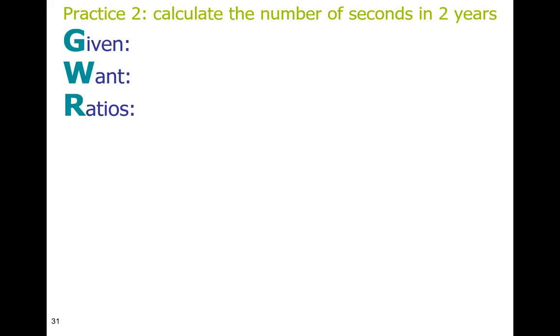The given in the problem is always the number given to you. So when we read through the problem, the given is going to be two years. Make sure that you're not just writing two, but you're actually writing down two years. That unit is so important for you to know what step comes next. What we want is the question in the problem. Here it's asking us to calculate the number of seconds.